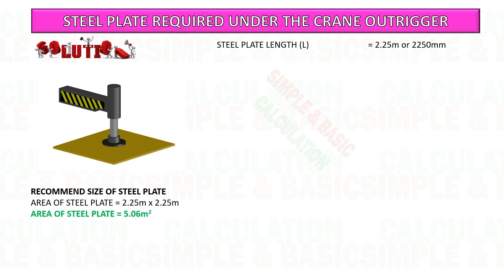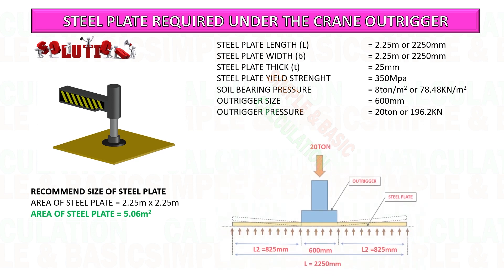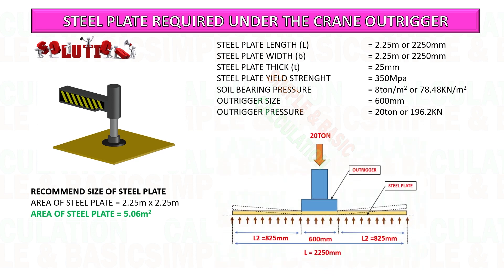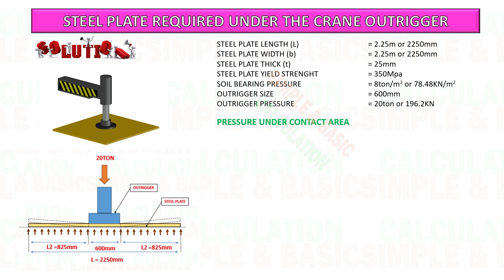This is the size and detail of the steel plate we will use for the calculation. Based on the formula given, start to calculate by substituting the given values into the formula. You can pause the video and follow along with the calculation — starting with the pressure under the contact area of the steel plate.